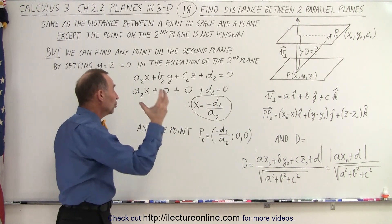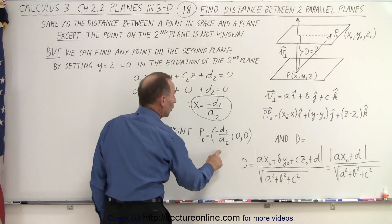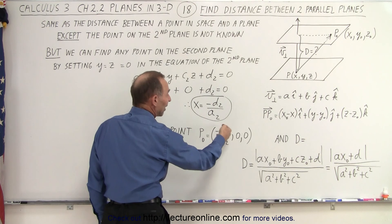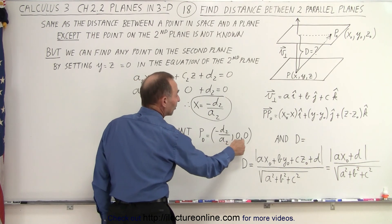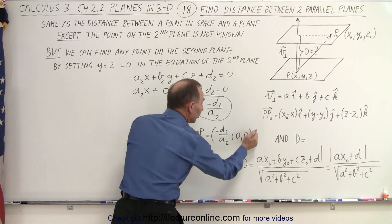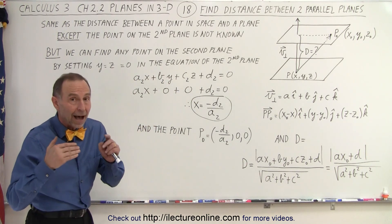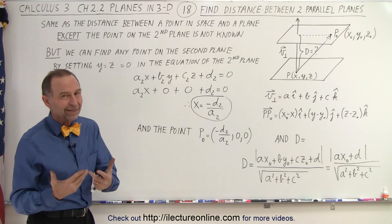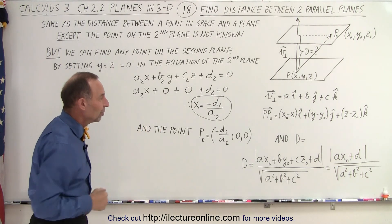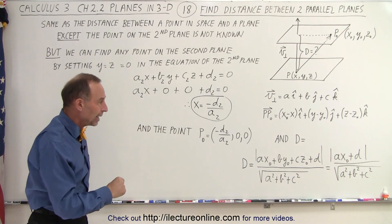And so when we plug that into the coordinates for the point, we see we only have a value for the X coordinate. The Y and Z coordinates will be zero. And this will now become our point in space. It happens to be on the other plane. And then we'll go to the exact same procedure to find the distance between a point and a plane.